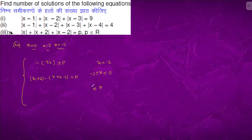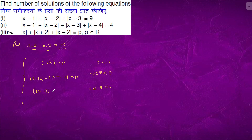For x bigger than minus 2 and less than 2, two terms will come out to be positive and one term will come out to be negative. For x bigger than or equal to 2, all terms come out to be positive, which equals p.